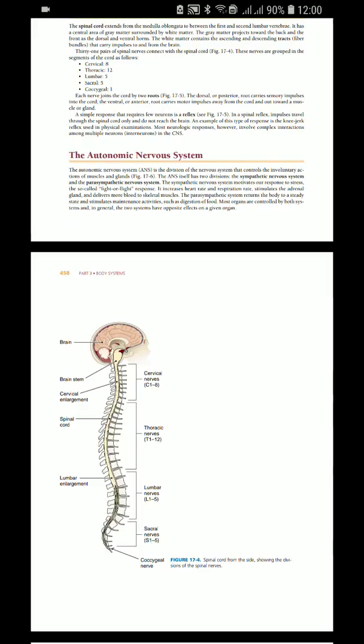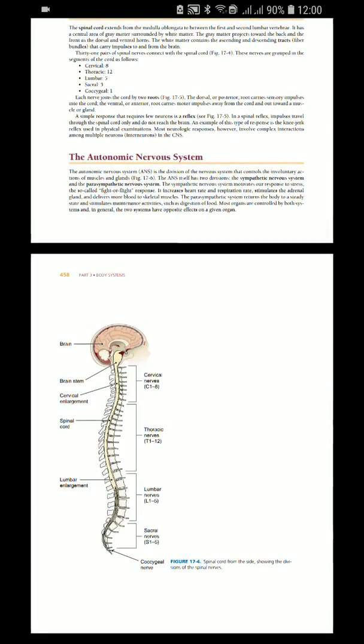Each nerve joins the cord by two roots. The dorsal root, also called the posterior root, carries sensory impulses into the cord. The ventral root, or anterior root, carries motor impulses away from the cord and out towards the muscle or gland.